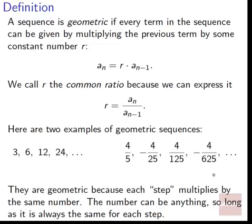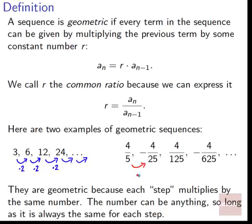Here are two examples of geometric sequences: 3, 6, 12, 24 continuing on; and 4/5, -4/25, 4/125, -4/625 continuing on. They're geometric because each step multiplies by the same number. In the first one, every step we multiply by 2: 3 to 6, 6 to 12, 12 to 24. In the second, we multiply by -1/5 each step: from 4/5 to -4/25, to 4/125, to -4/625.